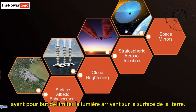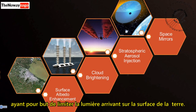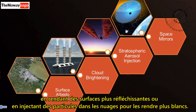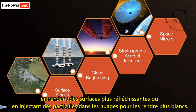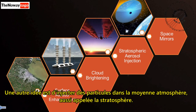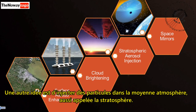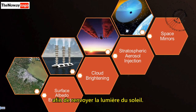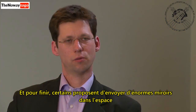For instance, reflecting more sunlight back from the surface of the Earth by making the surfaces brighter, or injecting particles into clouds to make them brighter. Another idea is injecting particles into the middle atmosphere — what we call the stratosphere — where they would reflect sunlight back.